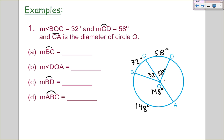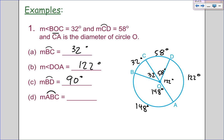So filling in the blanks: the measure of arc BC is 32 degrees. The measure of angle DOA is 122 degrees. Arc BD is 90 degrees, because we add them up. And arc ABC is 148 plus 32, which is 180 degrees.